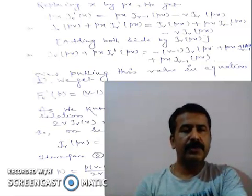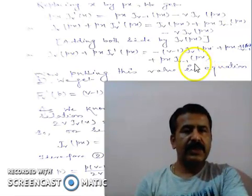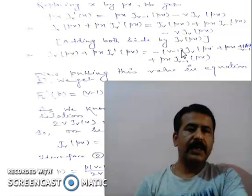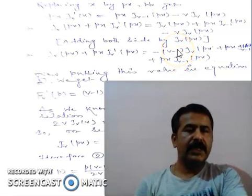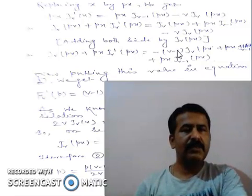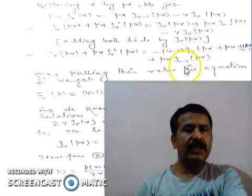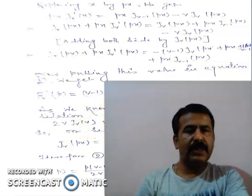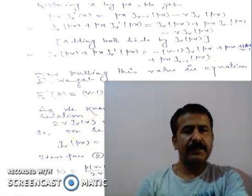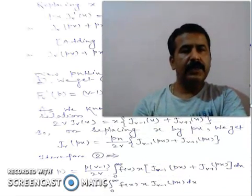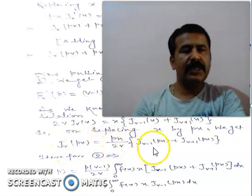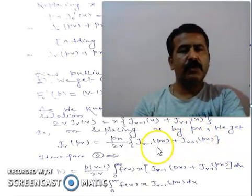From equation 1 to equation 2 we start from the definition, go through the recurrence relation, substitute x by px, add j'_v(px) to both sides, simplify, and substitute back into equation 1 to get equation 2. Now from the recurrence relation 2v·j'_v(x) = x·[j_{v-1}(x) + j_{v+1}(x)], replacing x by px we get j'_v(px) = (px)/(2v)·[j_{v-1}(px) + j_{v+1}(px)]. Now putting this value into equation 2.